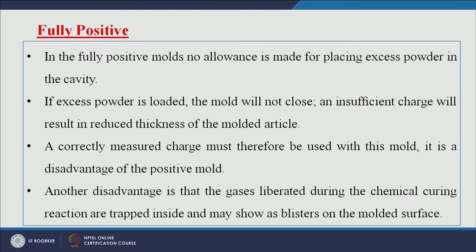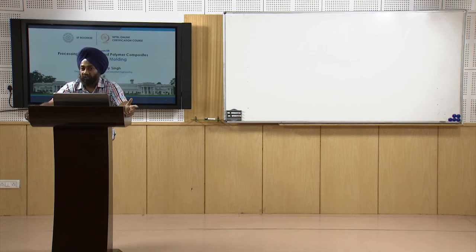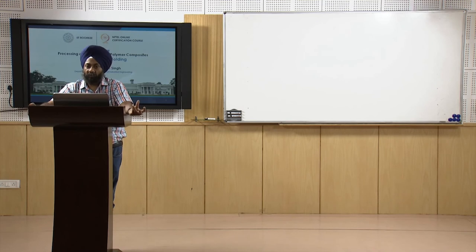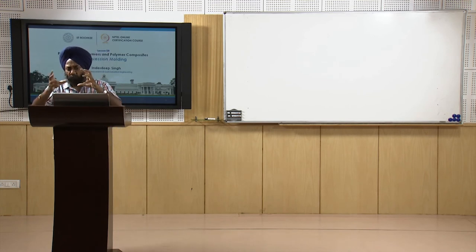Another disadvantage of the fully positive mold is that gases liberated during the chemical curing reaction are trapped inside and may appear as blisters on the molded surface. The main advantage is that the metered amount of raw material eliminates wastage, unlike the open flash type where the flash formed on the part must be trimmed later, wasting raw material.